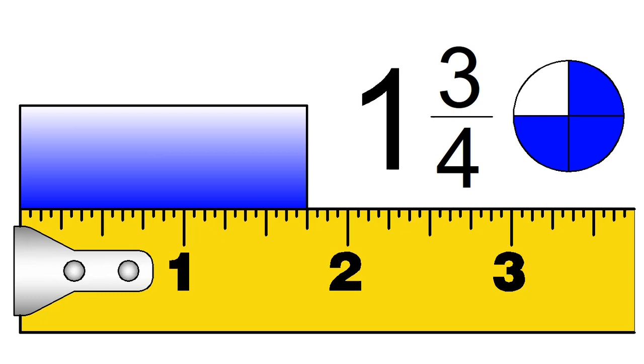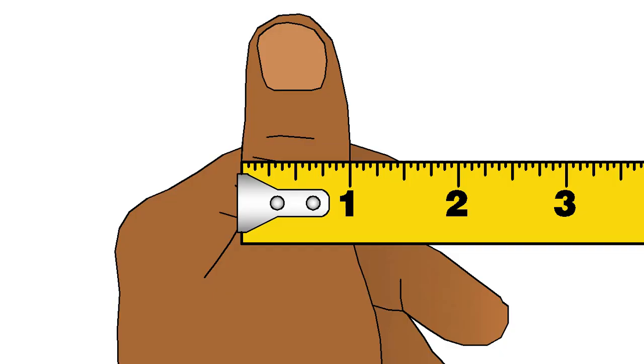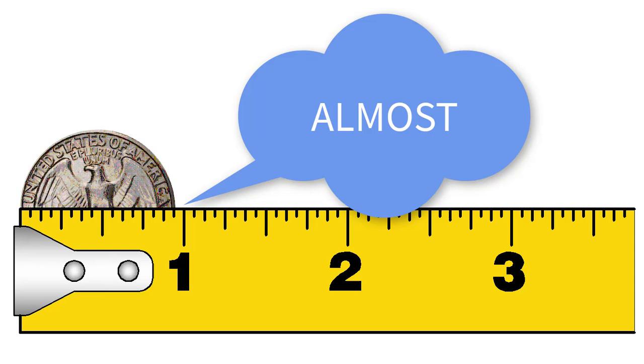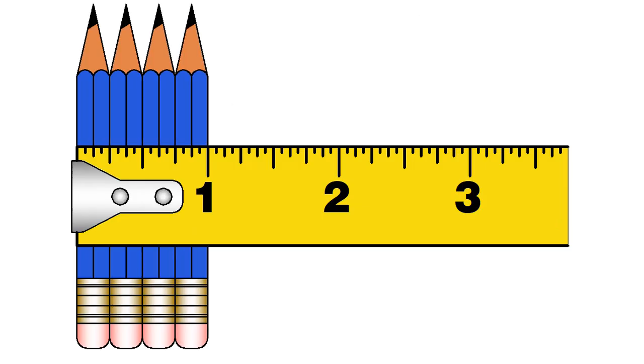Before we dive into reading measurements, let's start by getting a sense of how big an inch actually is. An inch is about the width of my thumb. This coin is about an inch wide. An inch is about as wide as four pencils laid side by side.